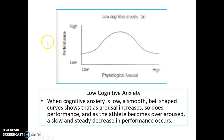When cognitive anxiety is low, a smooth bell-shaped curve shows that as arousal increases, so does performance. And as the athlete becomes over-aroused, a slow and steady decrease in performance occurs. So this is the inverted U-shaped graph, but it is only applicable when cognitive anxiety is low. As you can see, there is not a dramatic drop — it gradually decreases.